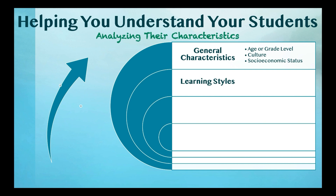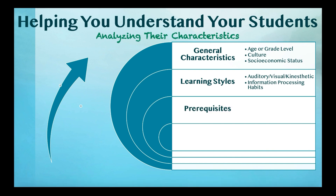Learning Styles: Describe the learning style preferences of individual students, such as auditory, visual, or kinesthetic, then determine their information processing habits — in other words, how students approach cognitive processing of information. Prerequisites: Do the students have the knowledge required to complete this module? Do they have entry competencies and knowledge of the technical vocabulary required? Do they have any biases or misconceptions about the subject?